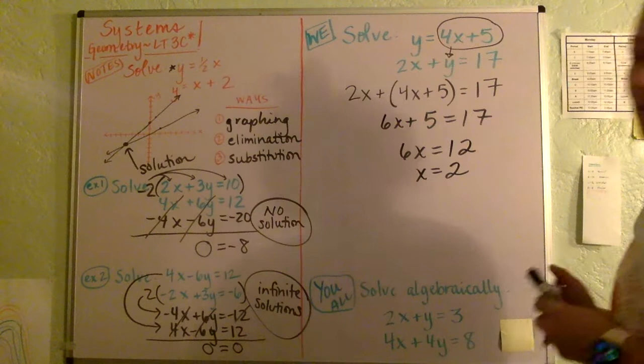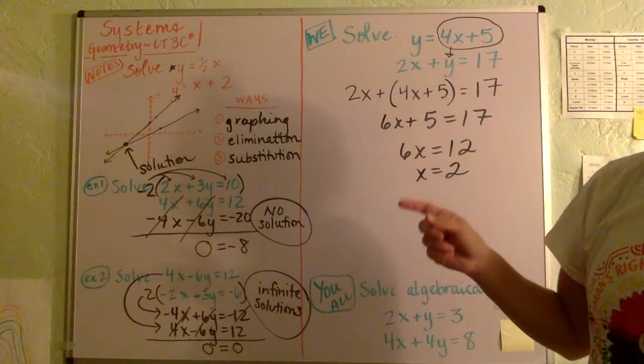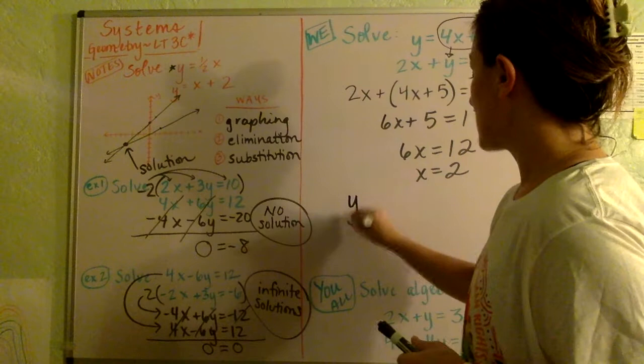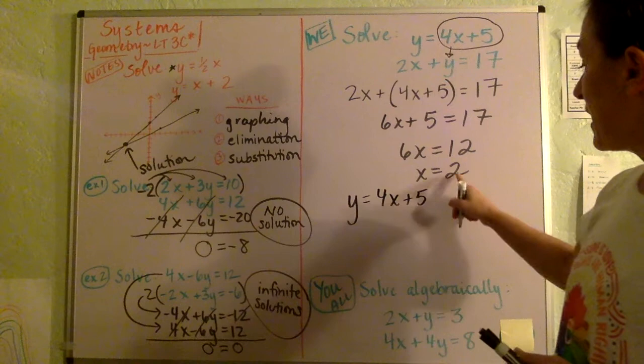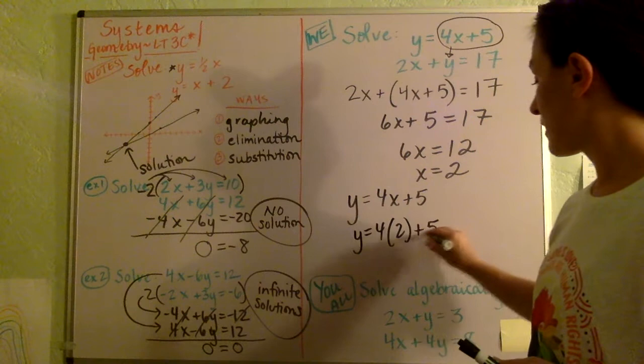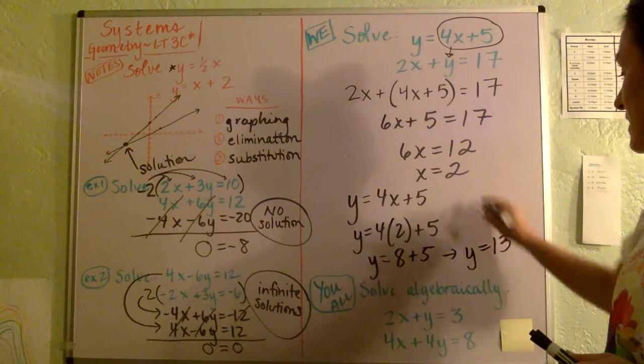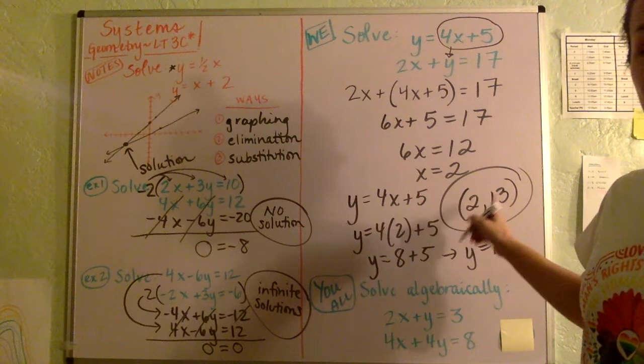Now we're halfway done. We have to go ahead and solve for the other variable, the Y, but now that we know the X, I'm just going to take the top equation. It doesn't matter which equation you take. You can take either the top or the bottom, and now you know what X is, so replace it, and you're going to get Y equals 8 plus 5, so Y is 13. So the answer here is 2, 13. This would be the point where the two lines cross.